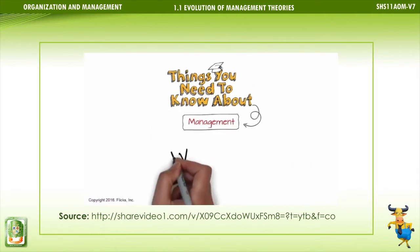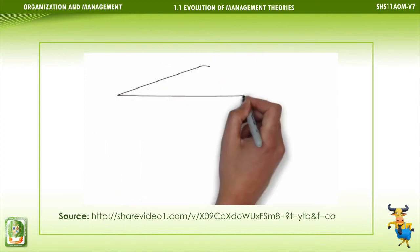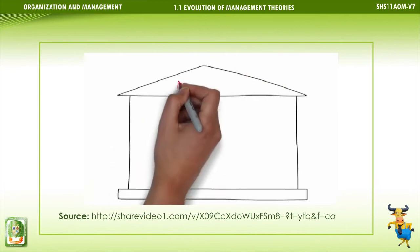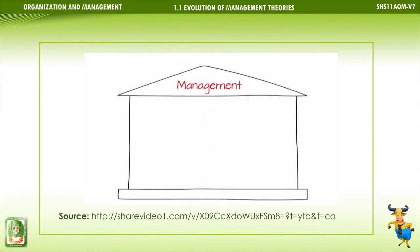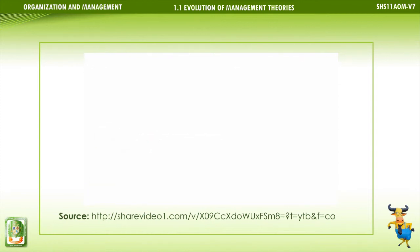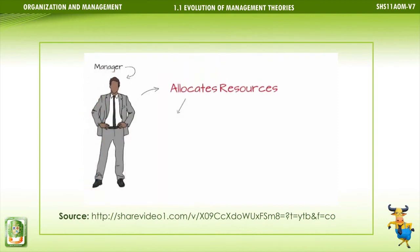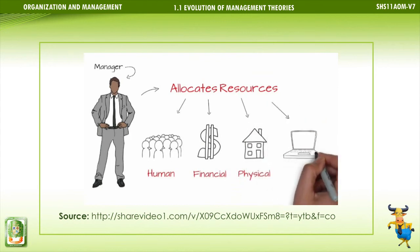Management takes place within an organization or structure. Note that at the very top of the structure is management, under which everything falls. Also note that leadership is the foundation of the structure — the upward-pointing arrows indicate that it permeates throughout the organization. Within the organization or structure, the manager allocates resources: human, financial, physical, and informational.